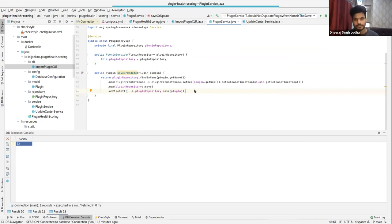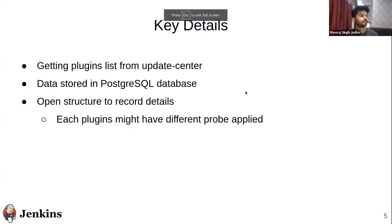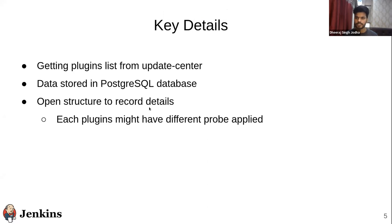The key details are: getting the plugin list and storing them into the database. We have an open structure to record details. As I mentioned, we have the details column storing a JSON object because that way it's flexible in future — different plugins with different properties can have their details stored inside that JSON object as per their properties. That's a very conscious decision we have taken.